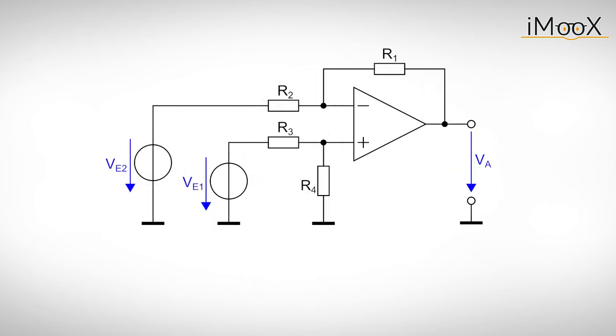Superpositioning the two individual output voltages gives the overall output voltage Va. As we can see the output voltage Va is proportional to Ve1 minus Ve2 and we can scale the individual input voltages by the given factors.